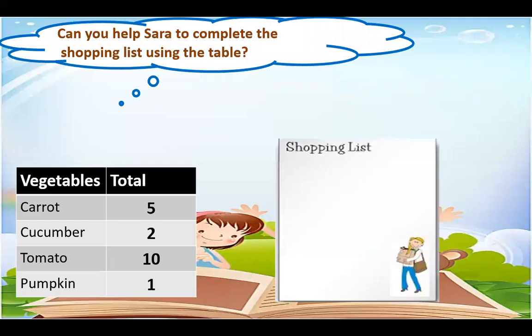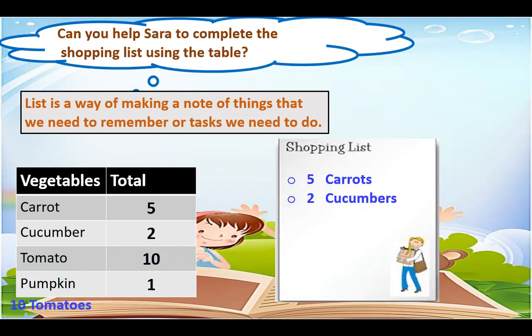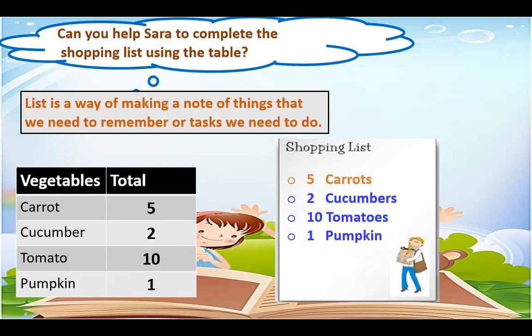Now, can you help Sara complete the shopping list using the table? The table has vegetables and total — carrot, cucumber, tomato, and pumpkin. A list is a way of making a note of things that we need to remember or tasks we need to do. The shopping list is 5 carrots, 2 cucumbers, 10 tomatoes, and 1 pumpkin. That is Sara's shopping list.